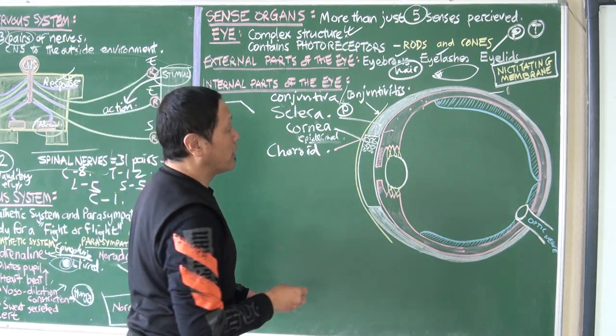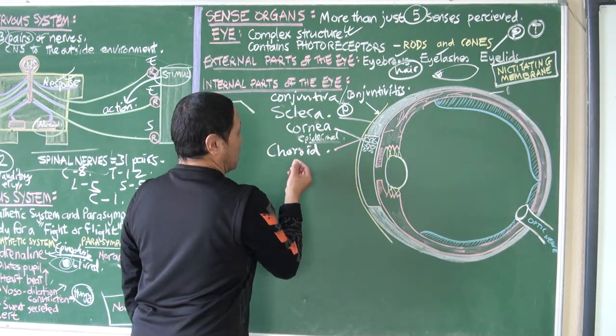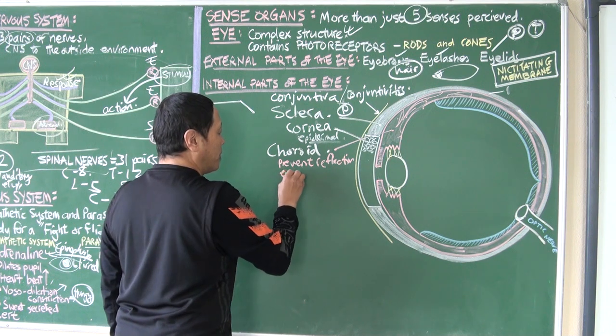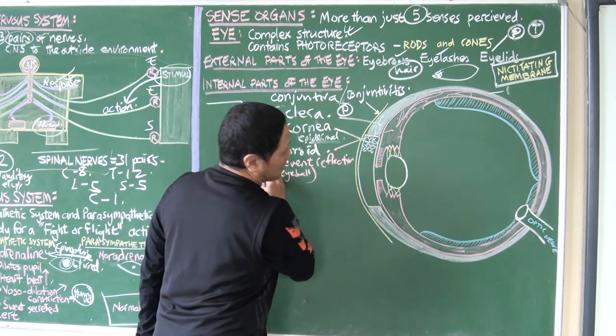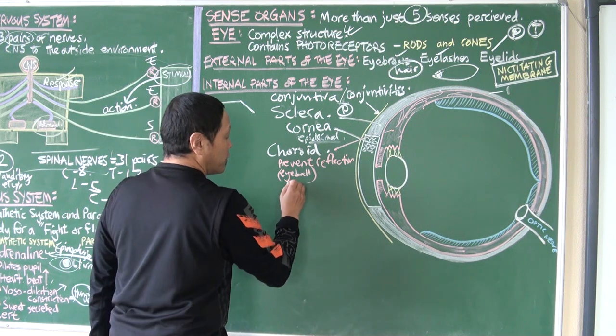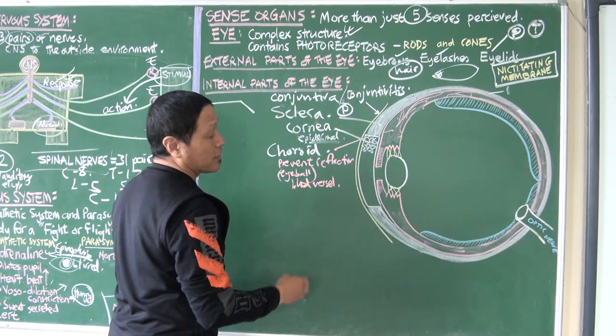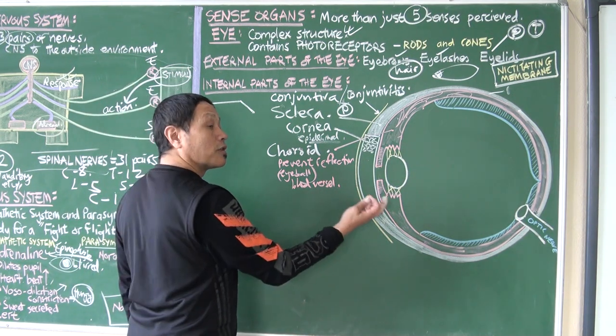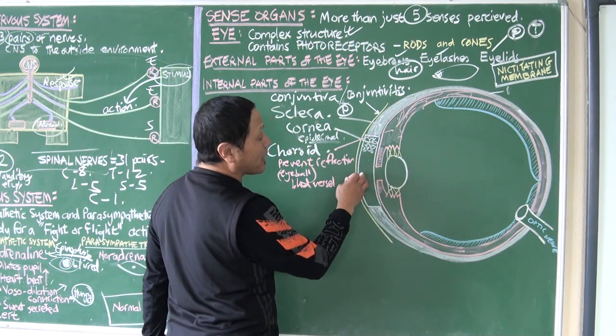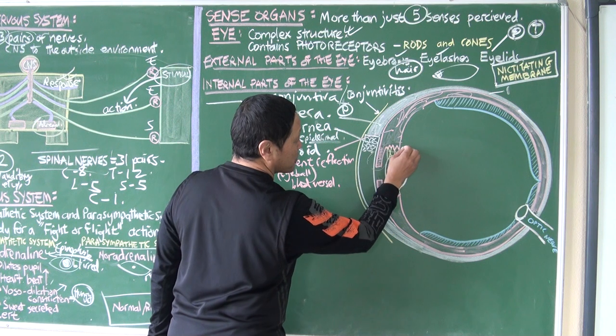Then we move on to the next layer known as the choroid. This layer is called choroid. It's slightly dark in color and has lots of blood vessels. It's dark so that it can prevent reflection within the eyeball. Once light enters, it cannot reflect all around - that is prevented by this dark layer. It also contains a large number of blood vessels in order to supply nutrients to all the cells of the different tissues that form the eye, and it also removes the waste from it.